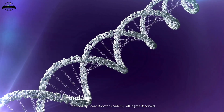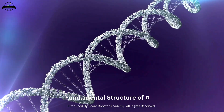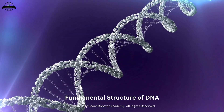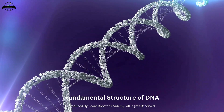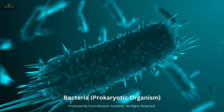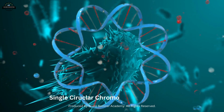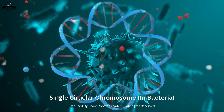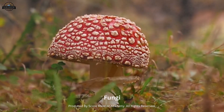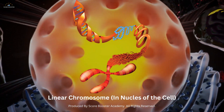While the fundamental structure of DNA is conserved across all life forms, there are variations in the DNA sequences and the organization of genetic material. Prokaryotic organisms, such as bacteria, have a simpler organization with a single circular chromosome, while eukaryotic organisms, including plants, animals, and fungi, have linear chromosomes contained within a nucleus.